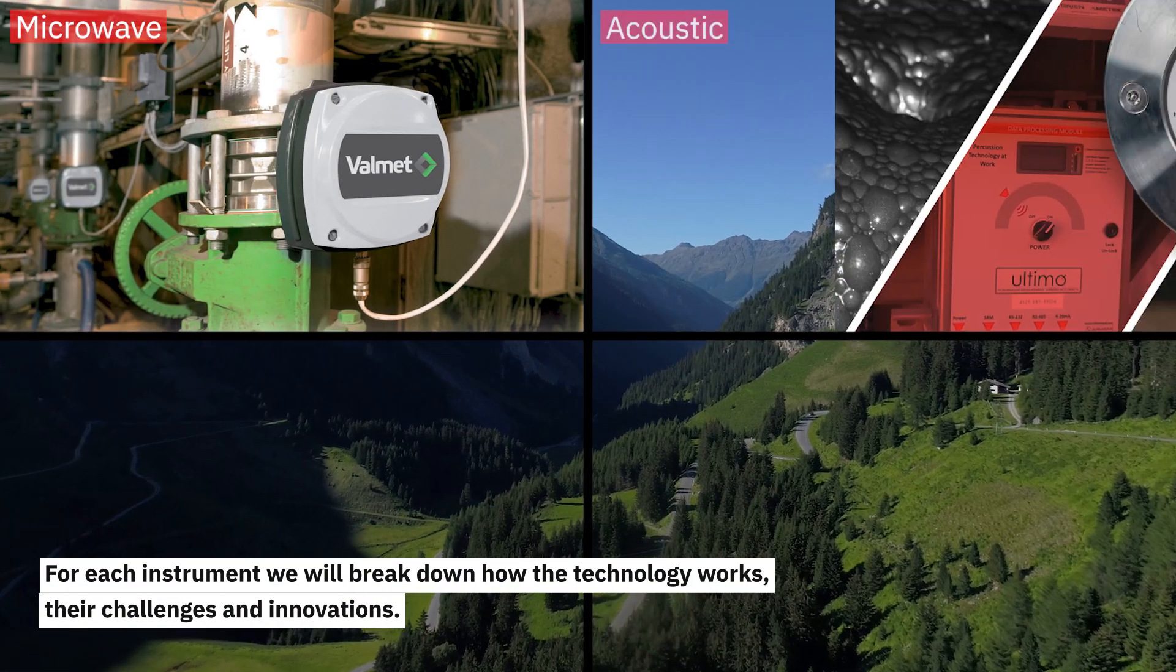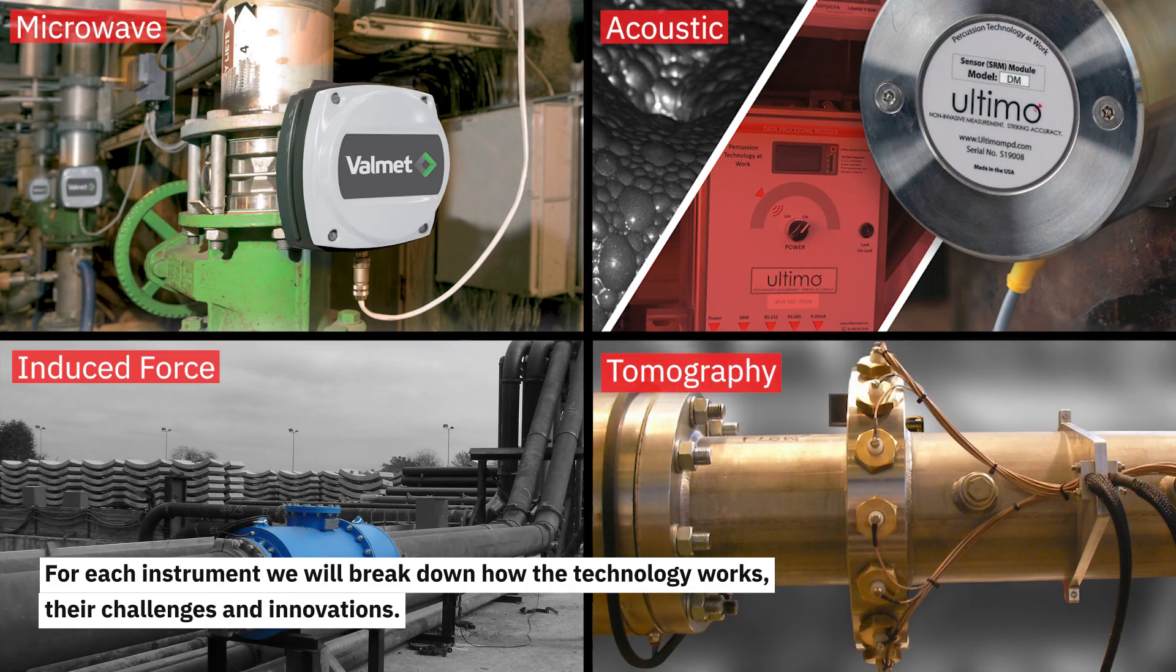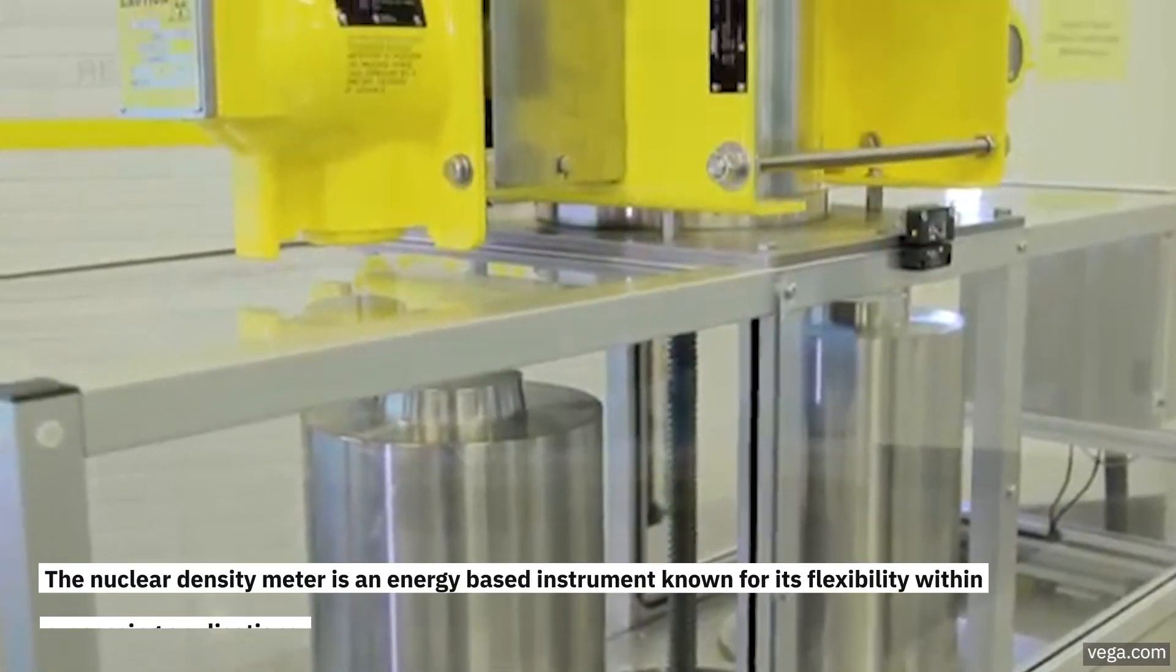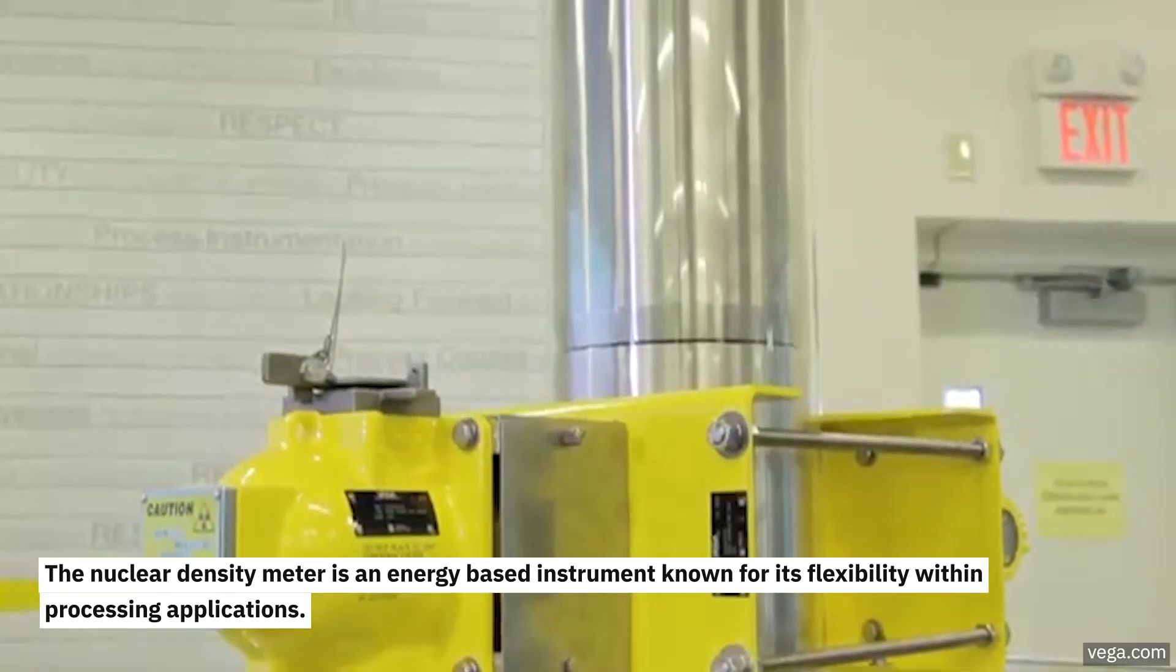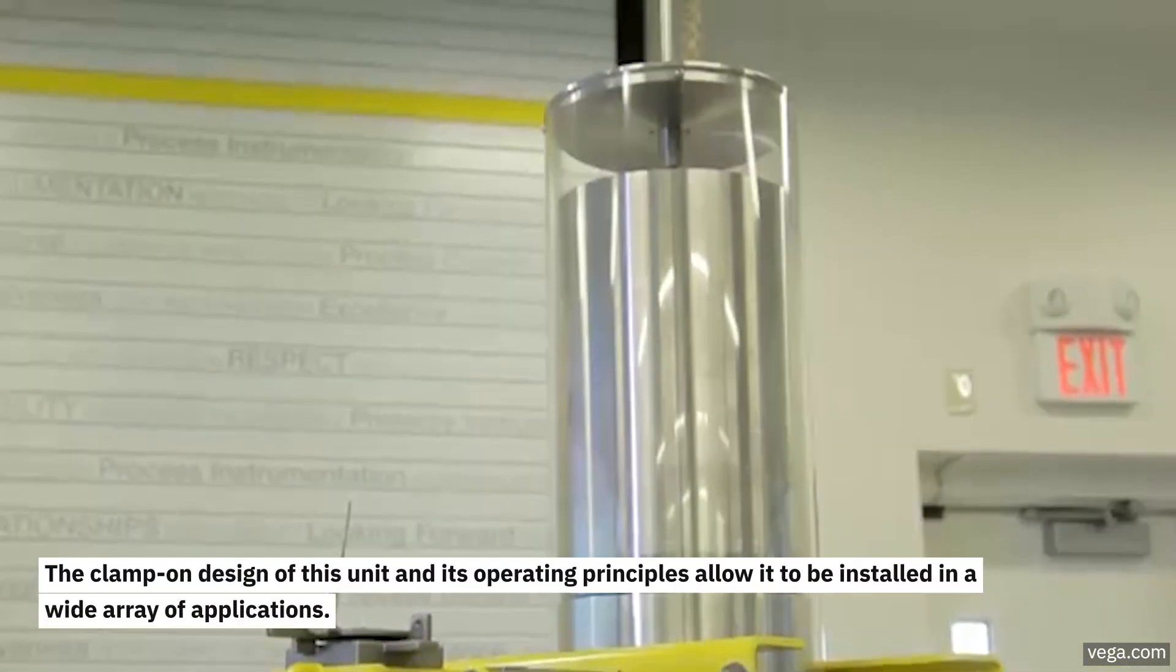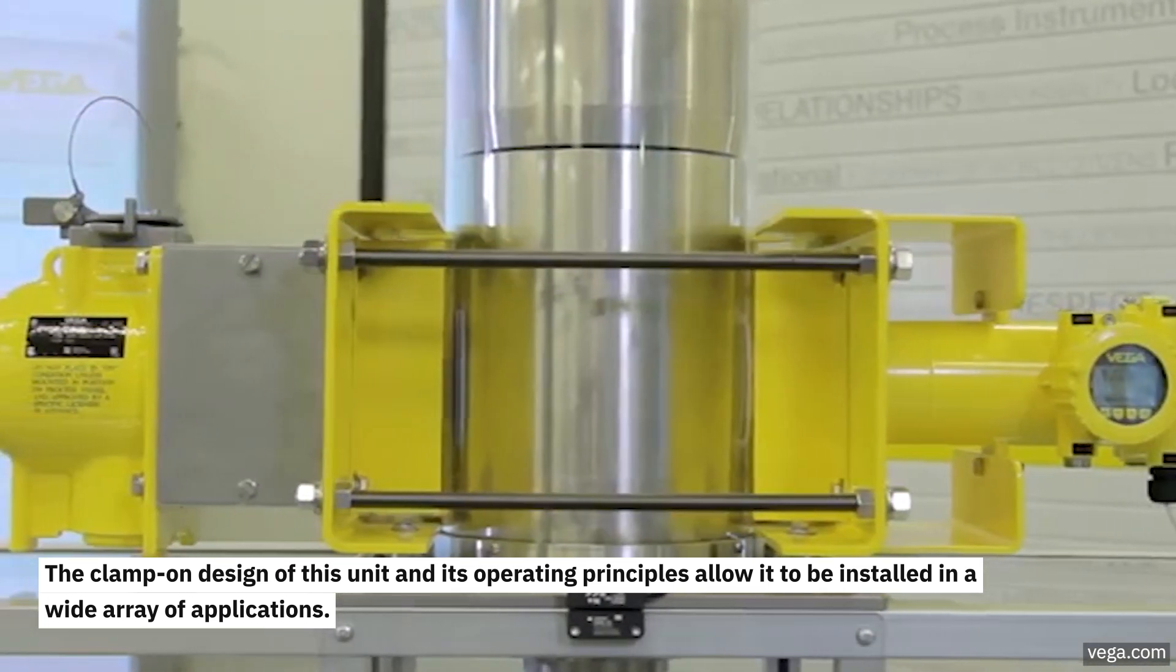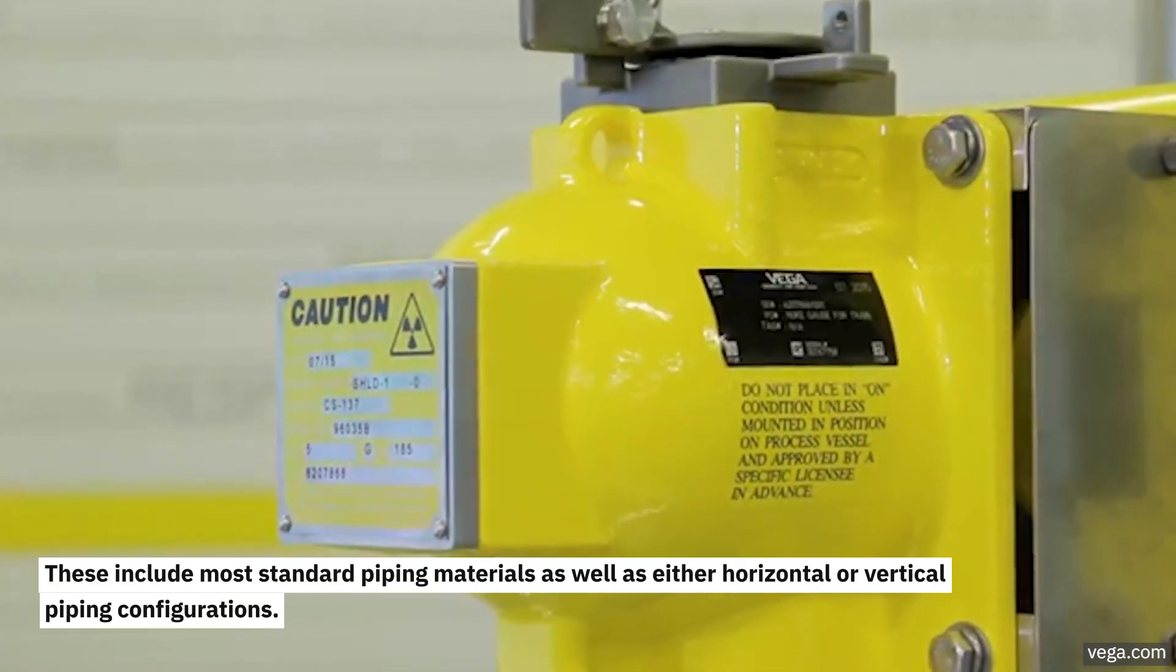Let's get started. The nuclear density meter is an energy-based instrument known for its flexibility within processing applications. The clamp-on design of this unit and its operating principles allow it to be installed in a wide array of applications. These include most standard piping materials as well as either horizontal or vertical piping configurations.